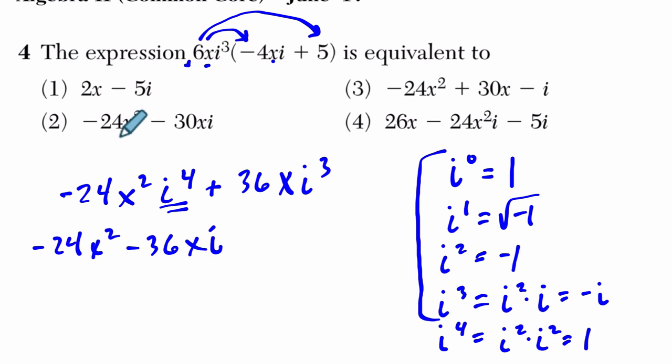So do we have that choice here? Yep, except I multiplied incorrectly. 6 times 5 is not 36, it's 30. And that is choice 2. All right, I hope that helps.